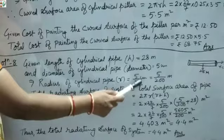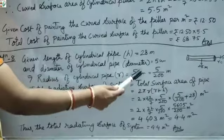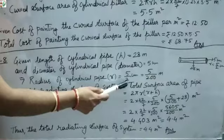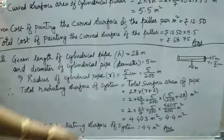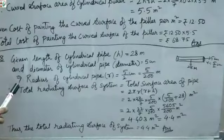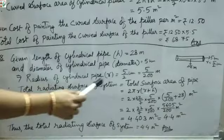Since height is in meters but radius is in cm, both units must match. We convert: 5 ÷ 2 cm ÷ 100 = 5 ÷ 200 m. So radius = 5/200 m. Now both radius and height are in meters.